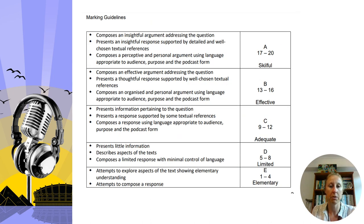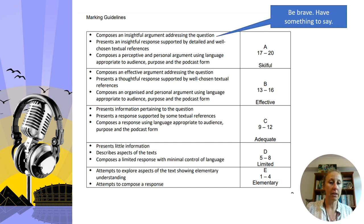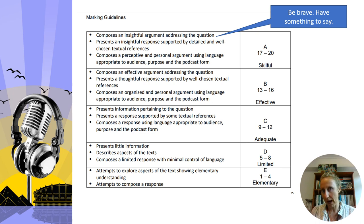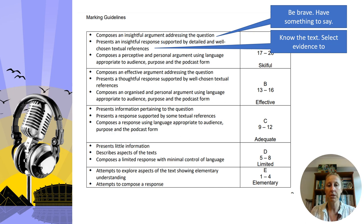Let's look at the assessment criteria. There are three criteria and we'll zoom in on the A range. The first criterion is how well you compose an insightful argument addressing the question — you have to answer the question. Insightful argument means we want you to be brave, to have something to say about this text: an interpretation of meaning, an argument, not just things you know, but a cohesive argument you'll prove over the four minutes. We want an insightful response supported by detail and evidence — well-chosen textual references, quotes from the book, analysis of how meaning has been created, and what devices Vonnegut used to communicate his message.